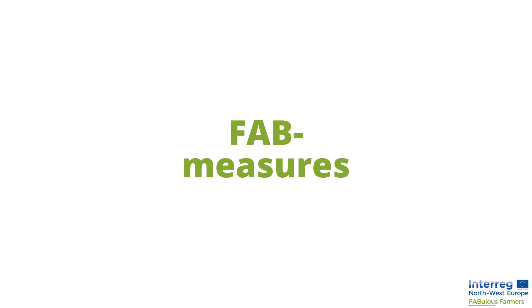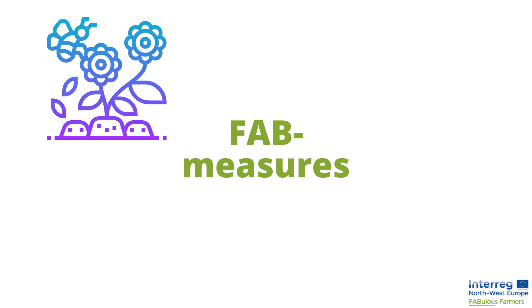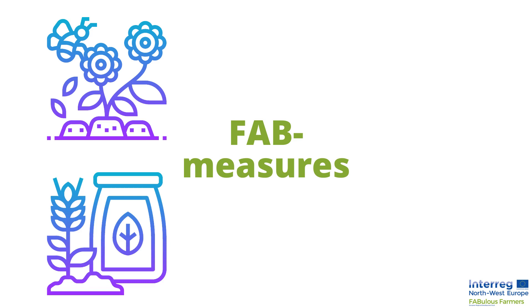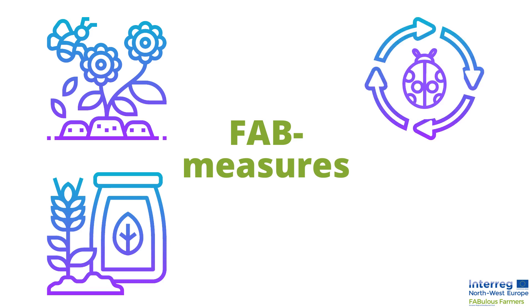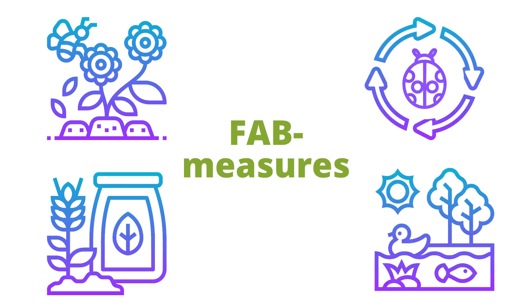FAB measures are related to diverse ecosystem services like pollination, soil quality, pest control, or water quality. Depending on the measure, you have more impact on one or the other ecosystem service.